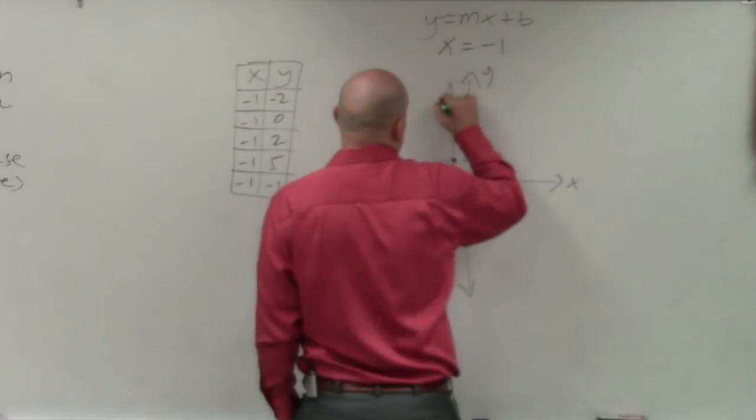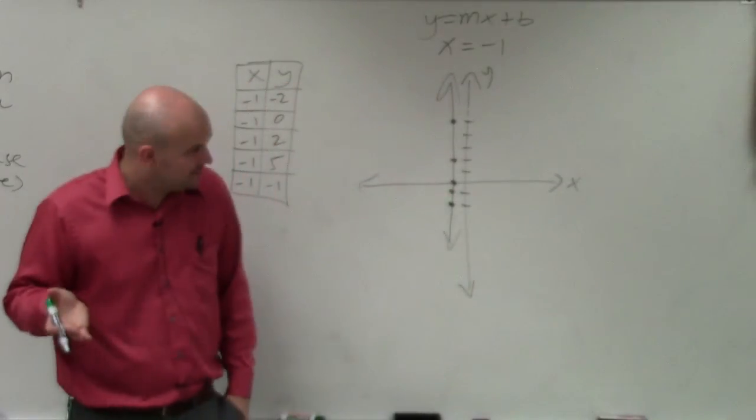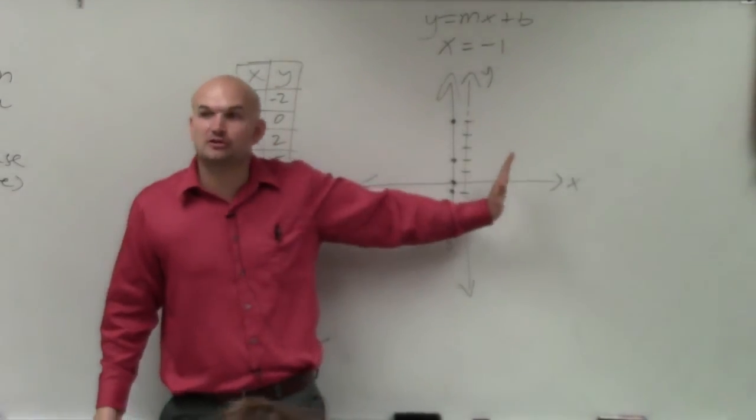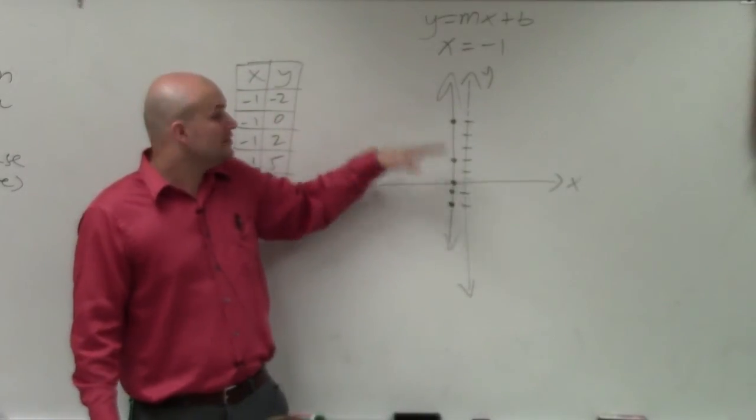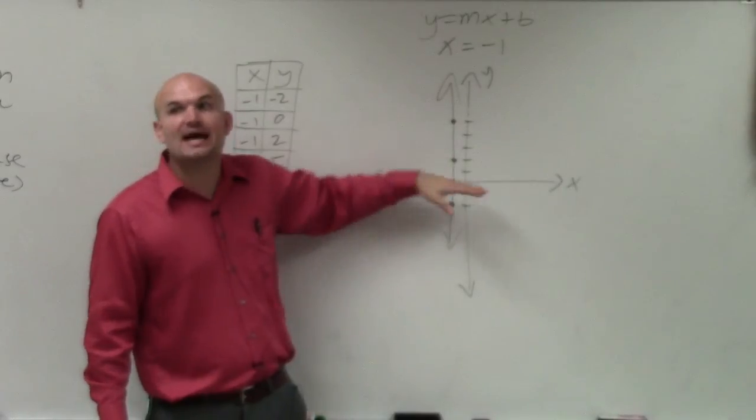So whenever you guys have x is equal to a value, know that it's going to produce a vertical line at the x value. When y is equal to a value, know that it's going to produce a horizontal line at the value of y.